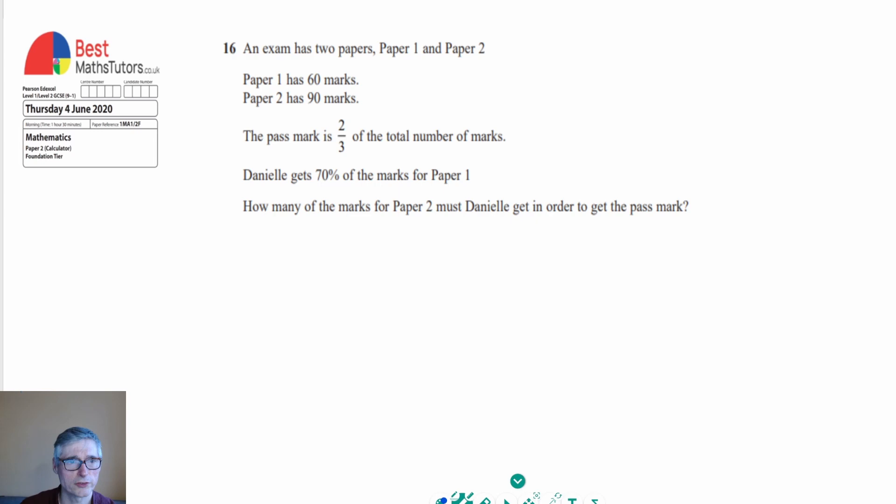Paper 1 has got 60 marks, paper 2 has got 90 marks, and the pass mark is two-thirds of the total number of marks. So it says Danielle gets 70% of the marks on paper 1. How many of the marks on paper 2 must Danielle get in order to get the pass mark?